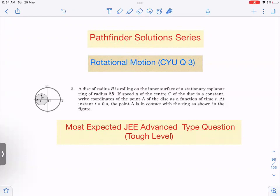The question is that a disk of radius R is rolling on the inner surface of a stationary coplanar ring of radius 2R. You can see from the diagram this is a ring of radius 2R and this is a disk of radius R. If u is the speed of the center C of the disk and is constant, the speed is constant not velocity, velocity can't be constant.